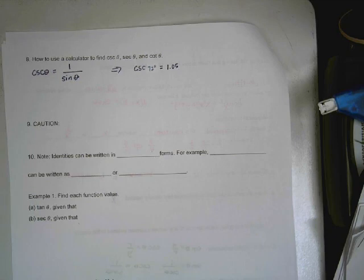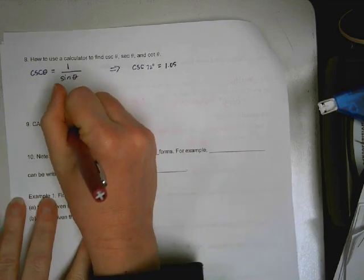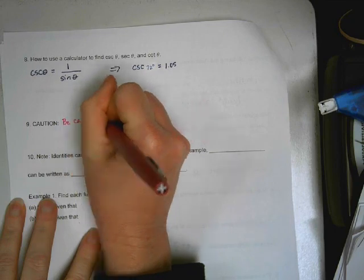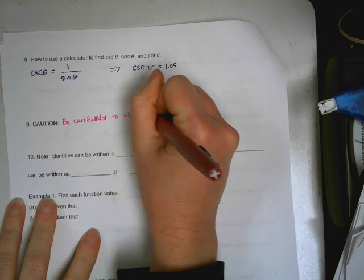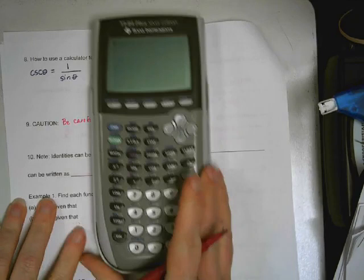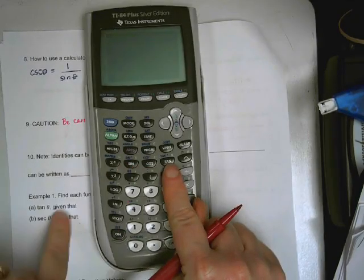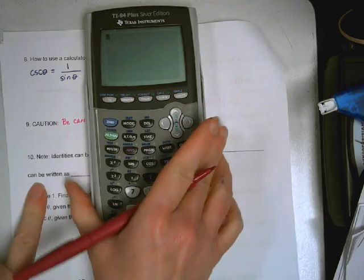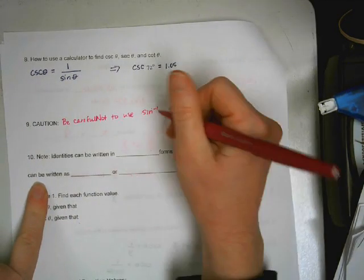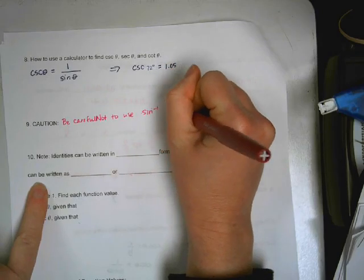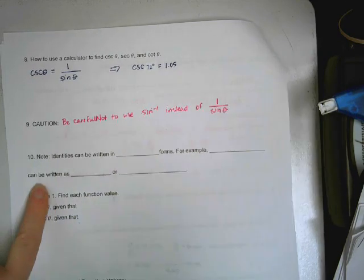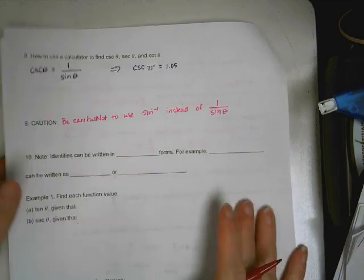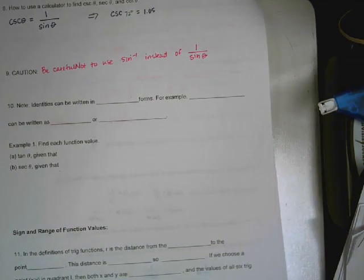Caution. Be very careful. This happens if you get in a hurry and you're just not thinking. Be careful not to use sine of negative 1. You can see that right here, above sine, cosine, and tangent. That's not the same thing. Those aren't the same thing. We'll be using those in a day or two. So you'll see the difference. But just be careful. That's not what you're using when you're trying to find reciprocals.